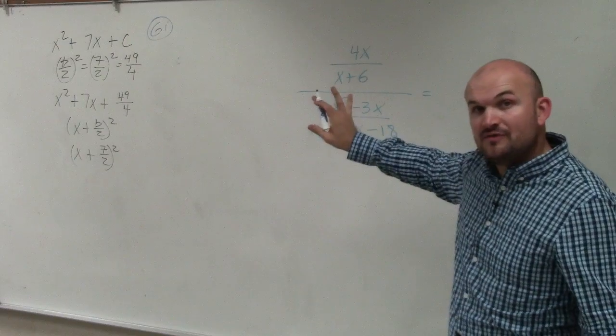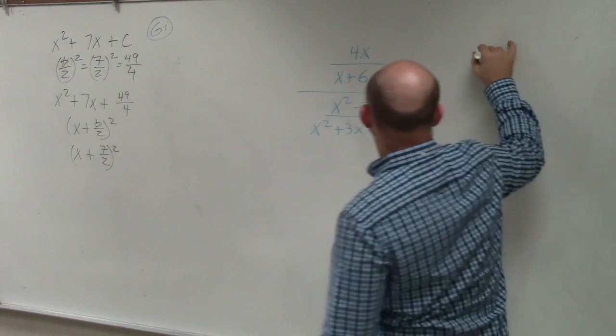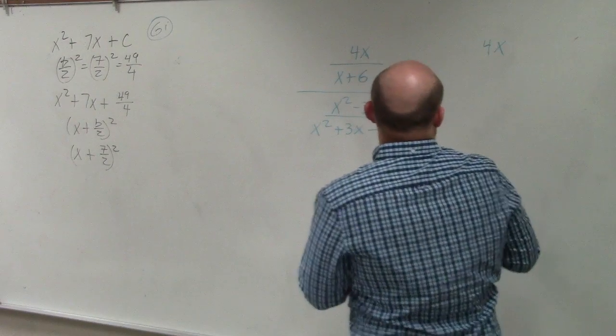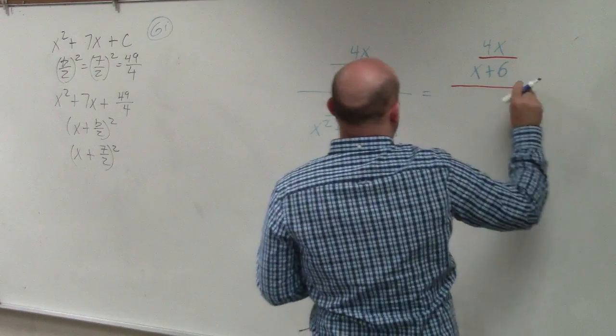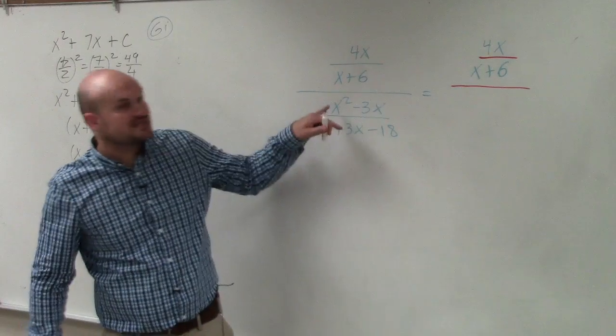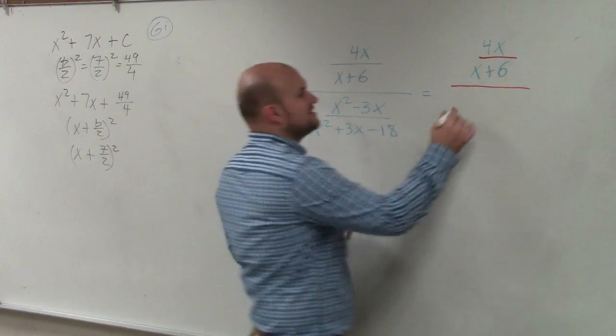Look at every numerator and denominator of each fraction and simplify. 4x I cannot simplify any further, nor can I simplify x plus 6. However, x squared minus 3x, I do notice that those have an x in common. So I'm going to factor out an x.